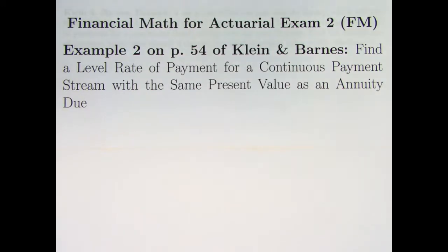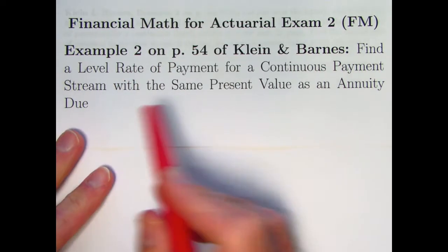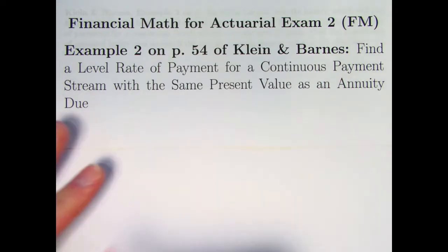It has some problems where the payments are made at a different frequency that interest is convertible, and I found a problem related also to continuous payment streams. It's example two on page 54 of that resource. It's about finding the level rate of payment for a continuous payment stream that's got the same present value as a certain annuity due.